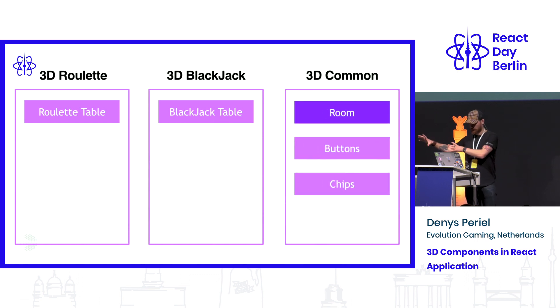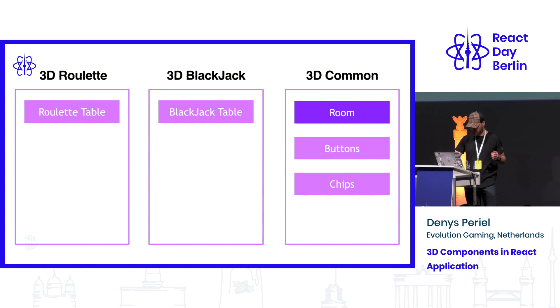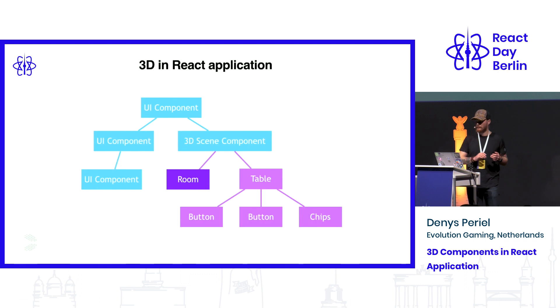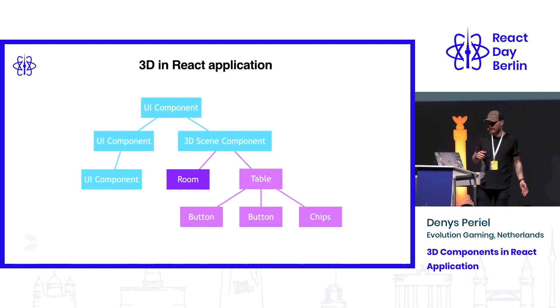Some of the elements are reusable, so we could make a kind of 3D component library where we just move our reusable elements and we don't want to reimplement them in each game. We just move them into a separate package and reuse them in both games. So we have the reusable components, and now we can assemble the game.